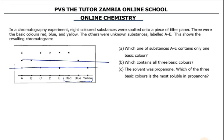Which of the substances A to E contains only one basic color? Let's come to A. A has yellow. What else does A have? You go straight and check — A has also got blue. So A has blue and yellow. Let's go to B. B has got blue, and nothing else.